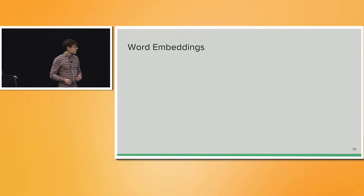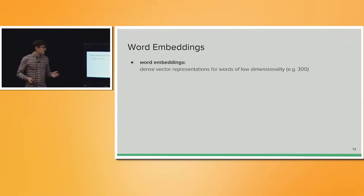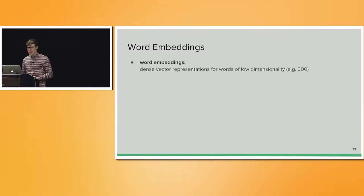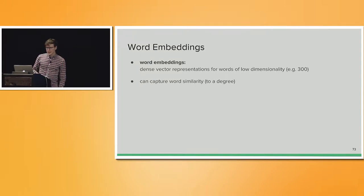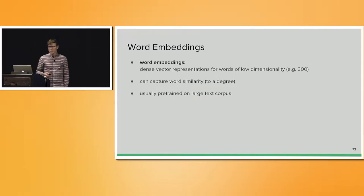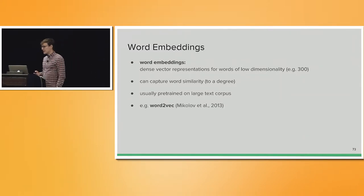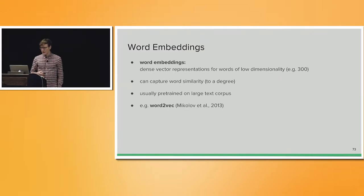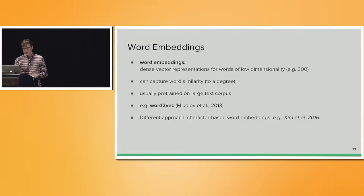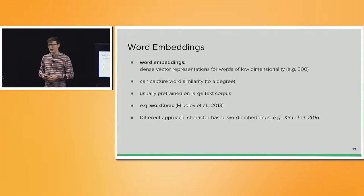This brings us to word embeddings — dense vector representations for words of lower dimensionality, like 300. These word embeddings can capture word similarity to some degree and are usually pre-trained on a large text corpus. You can download pre-trained embeddings on the web. A very prominent model for this is Word2Vec by Mikolov and colleagues. There are also different approaches to constructing word embeddings, for example constructing them from the character level upwards.